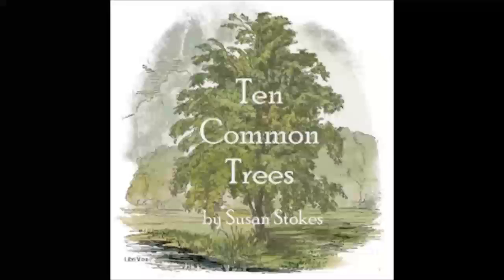The buds are of two kinds — leaf buds and flower buds. The leaf buds are usually single, the flower buds in clusters. They are no larger than the stem. The scales cover the end of the twig. They are short scales, and around the edge of each is soft, fine wool to keep the tender inner part warm. The twigs are also downy.